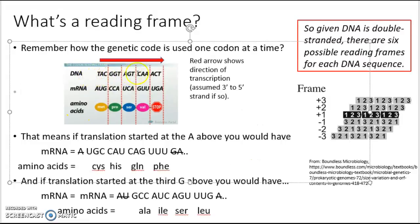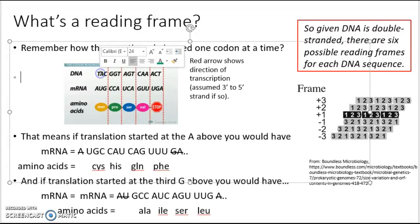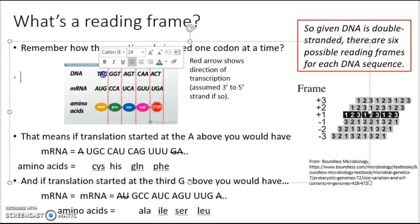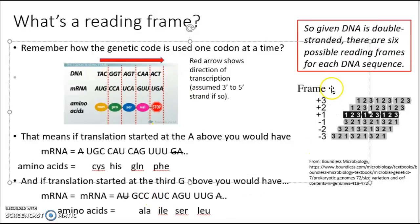There are three possible reading frames, depending on whether we start at the first, second, or third position. This gives us frame one, two, and three — reading in units of three down from there to infer the genetic message. So there are three possible reading frames for using this sequence of DNA as a gene. But remember that DNA is double-stranded, so there is a complementary anti-parallel DNA sequence that can also be utilized as the template. In total, there are six reading frames for each possible DNA sequence.